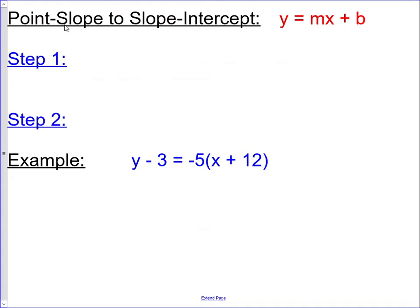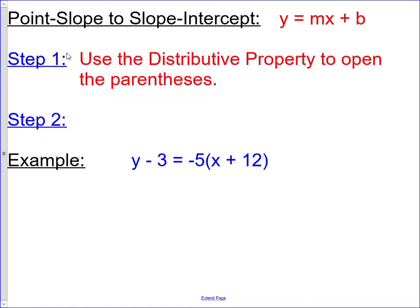To go from point-slope to slope-intercept, there are two steps. The first step is to use the distributive property to open up the parentheses, and the second step is to isolate y by adding or subtracting. Let's see how that works with this example.